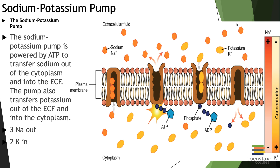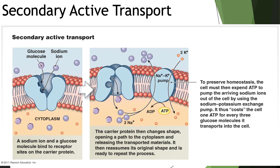The sodium-potassium pump is powered by ATP to transfer sodium outside of the cell into the extracellular fluid (ECF), and it also transfers potassium out of the ECF and into the cytoplasm. A key rule to remember: three sodium ions out and two potassium ions in. For secondary active transport, an example is the co-transport of glucose: as sodium and potassium move, the proteins facilitating that movement also have binding spots for glucose, so glucose moves into the system without directly requiring its own ATP — but because the overall process uses ATP, it is considered secondary active transport.